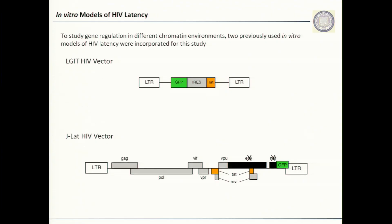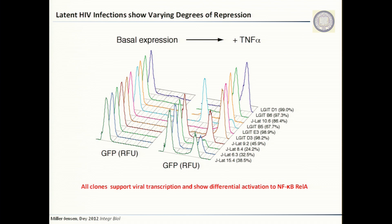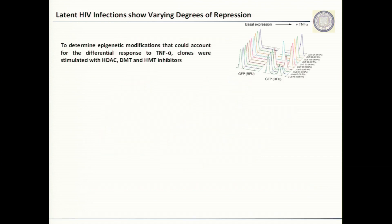To do that, we made use of two in vitro models of HIV latency previously used extensively in literature. One is called LGit, which has the minimal positive feedback loop in HIV, and the other is the JLAT model, which is essentially full-length HIV with mutations in env. We took five clones from each of these two vectors; under basal conditions they show no GFP expression. But when we stimulated them with TNF-alpha, which increases the level of REL-A in the nucleus, we see differential activation across these different clones.